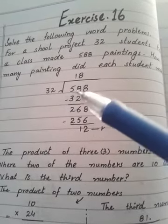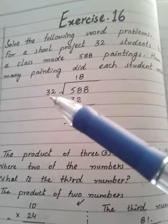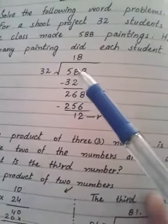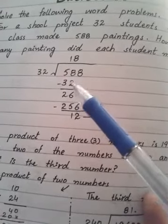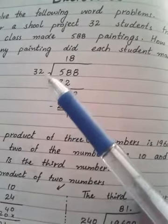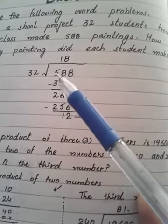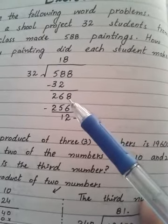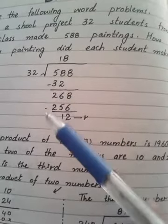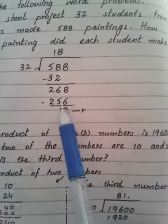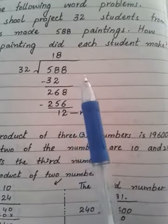Look here, 588 divided by 32. Write the multiples of 32. Where there are two digits outside and inside, check two digits. Look here 58. 32 ones are 32, 32 twos are 64 which will be greater. When you subtract, 8 minus 2 is 6 and 5 minus 3 will be 2. Write the next digit, 268. Then do 8 times because 9 times would be too much. 256 is the answer. Subtract these: 8 minus 6 will be 2, 6 minus 5 will be 1, and 12 will be the remainder. So 18 point something paintings each student made.